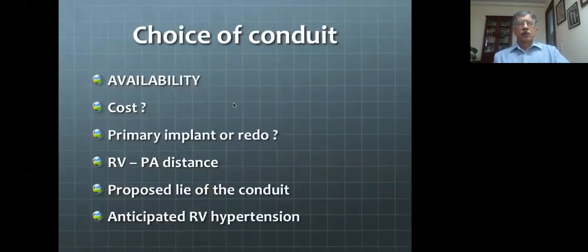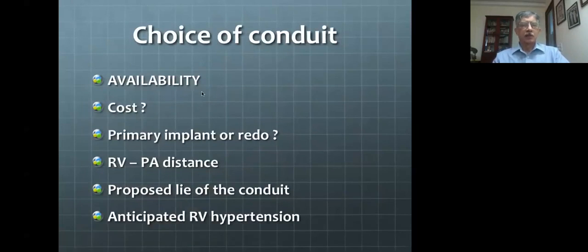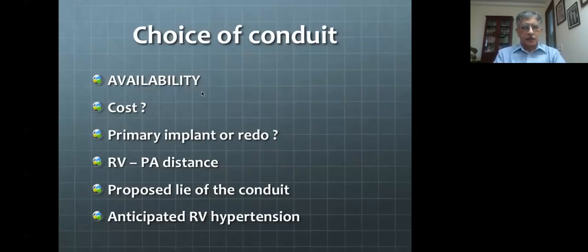How do you go about choosing what type of conduit to use for a particular patient? The most important factor is availability — you can use only those conduits actually available to you. Then, especially in our country, there is the issue of cost, which always becomes an important factor in any implant we use.